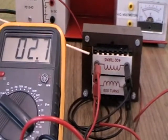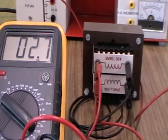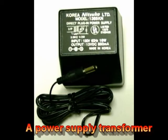Since NS is less than NP, this is called a step down transformer.